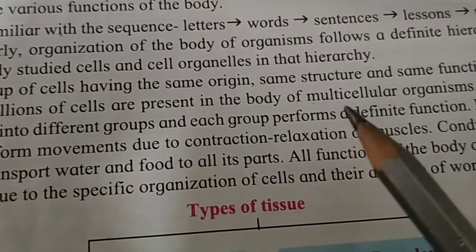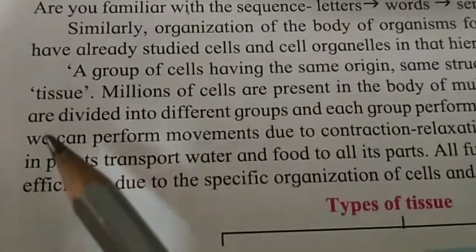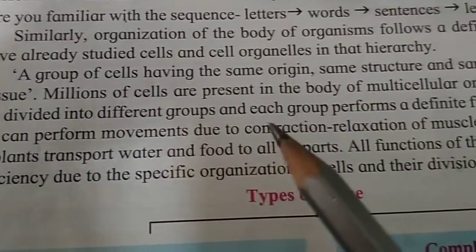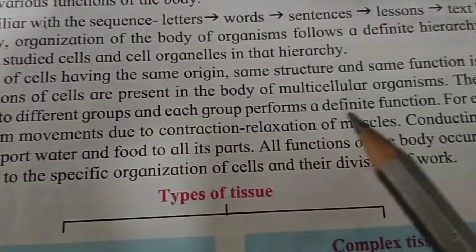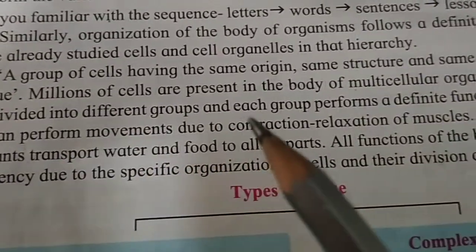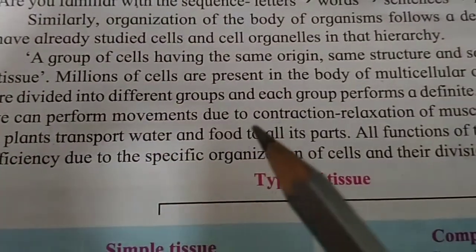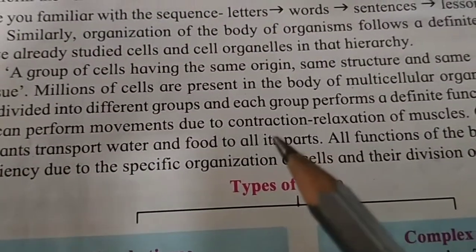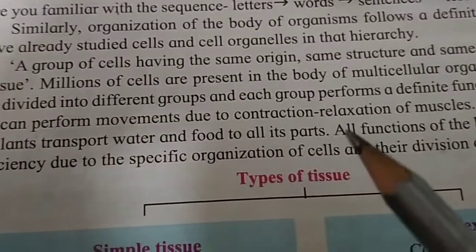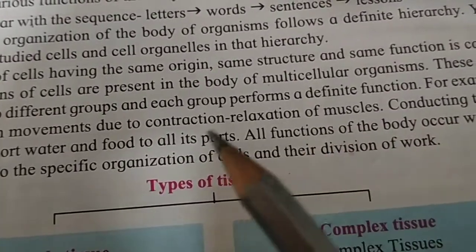In multicellular organisms, millions of cells are divided into different groups, and each group performs a definite function. For example, we can perform movement due to the contraction and relaxation of muscles.